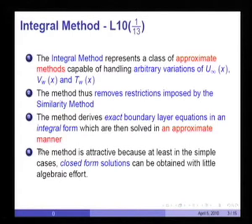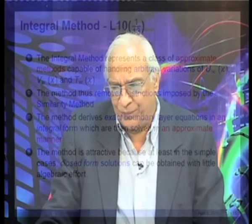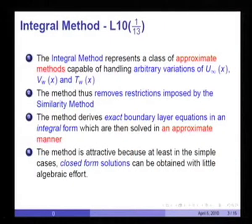Unlike the similarity method, this method is attractive because in some simple cases closed-form solutions can be obtained with little algebraic effort. At one time, people used to call it the integral method because you could do all the calculations by simple algebra without requiring a computer. The second advantage is that it can deal with any arbitrary variations of U infinity, Vw, and Tw.